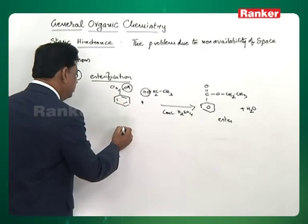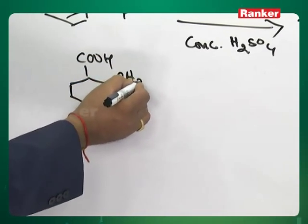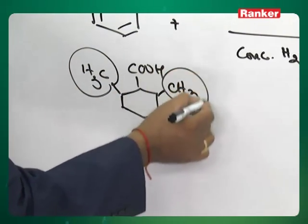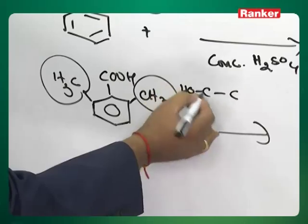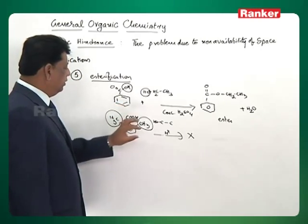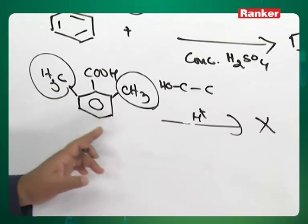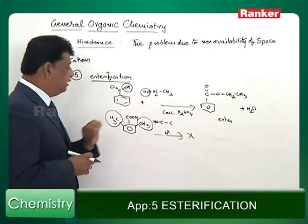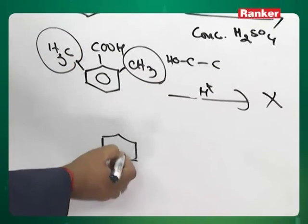But the same reaction when you want to do with the same benzoic acid, same conditions, but both sides we have some methyl groups. Now these methyl groups are blocking both sides. So the same ethyl alcohol is added here also, but unfortunately the reaction is not taking place. The reason explained: the COOH on both sides, methyl groups are blocking. If the methyls are found to be at para position or at meta position, there is no much influence, but specifically at ortho position we have this problem.